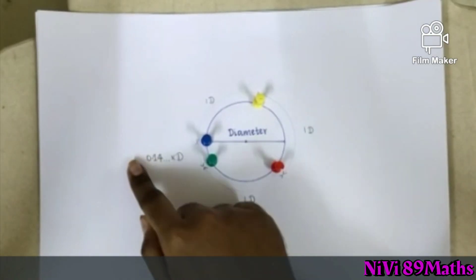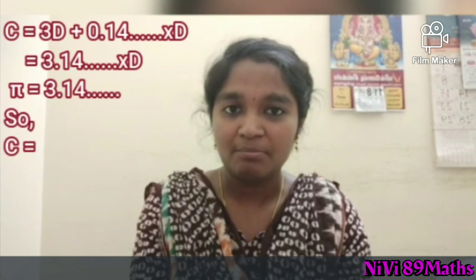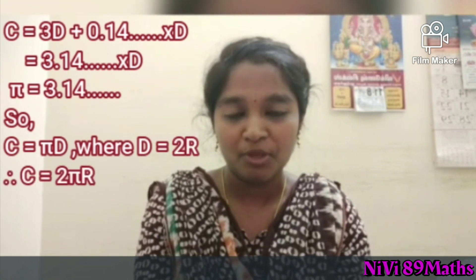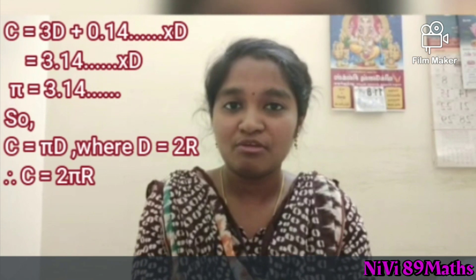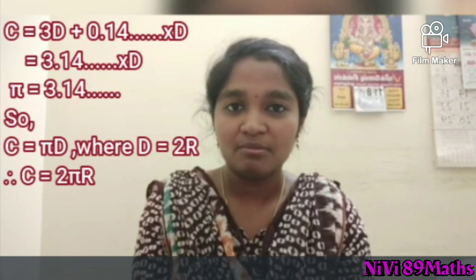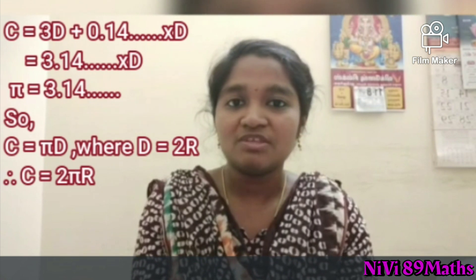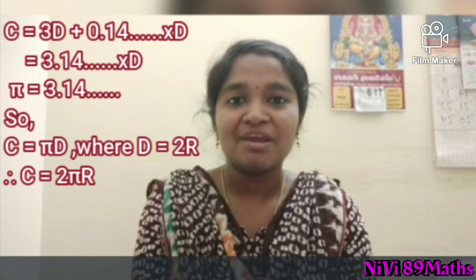This is the diameter of the circle. If we say 4, we have a number pi. That is pi. So the circumference of the circle is πD.